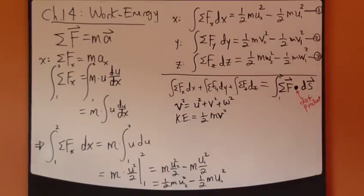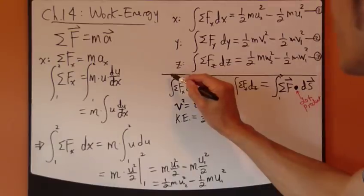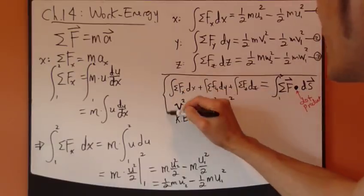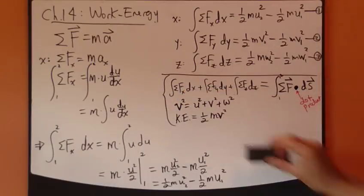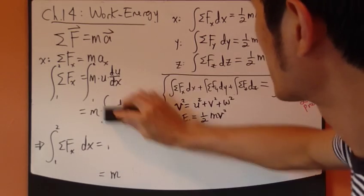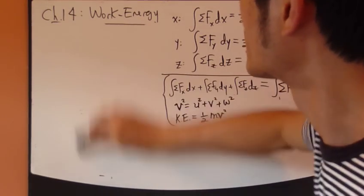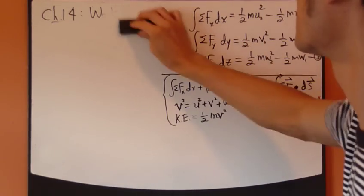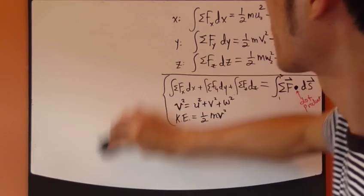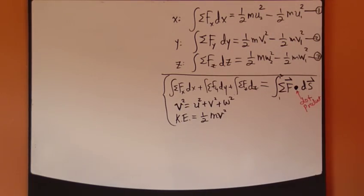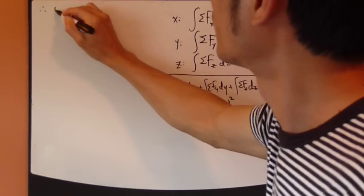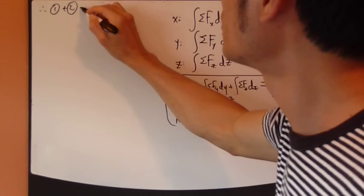And also kinetic energy, let's define as one-half m v square. So, with these three definitions, let's combine all these three equations. Equation one, two, and three. So, equation one plus two plus three.